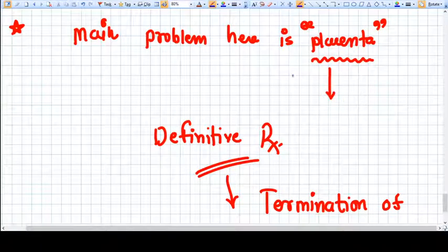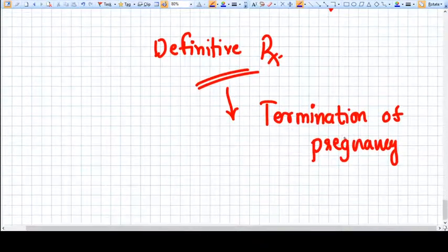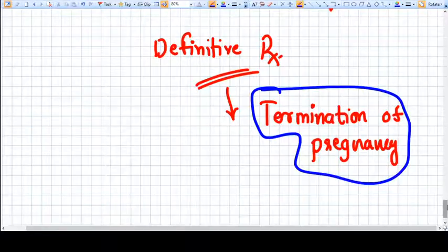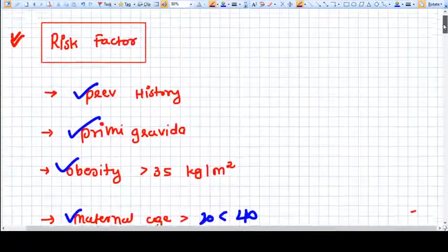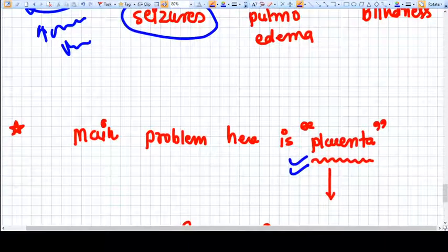Now here, the main problem is the placenta and what is the definite management? Removing the placenta, that's called termination of pregnancy. So this was all about the pathophysiology of PIH. In the fourth video, we will discuss the management of PIH. Thank you.